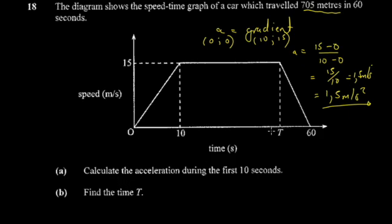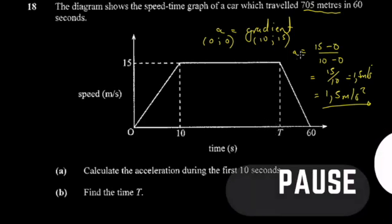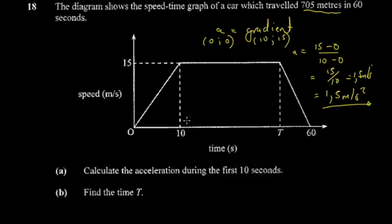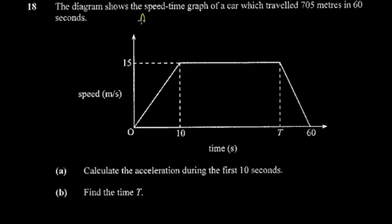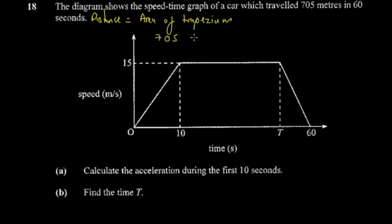For the next part, you're asked to find time t. This is a trick of knowing how it relates to the total distance. To find the total distance, you find the area of this trapezium. The distance equals the area of the trapezium. The distance is 705, and it equals the area of the trapezium.